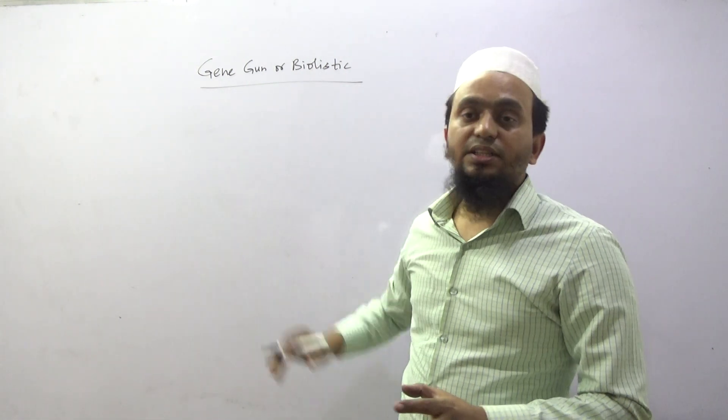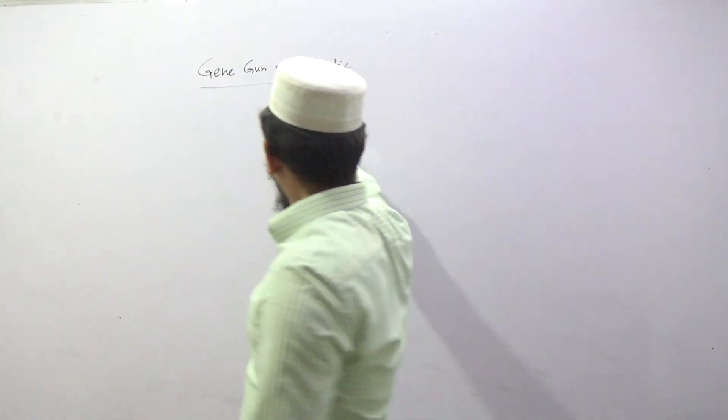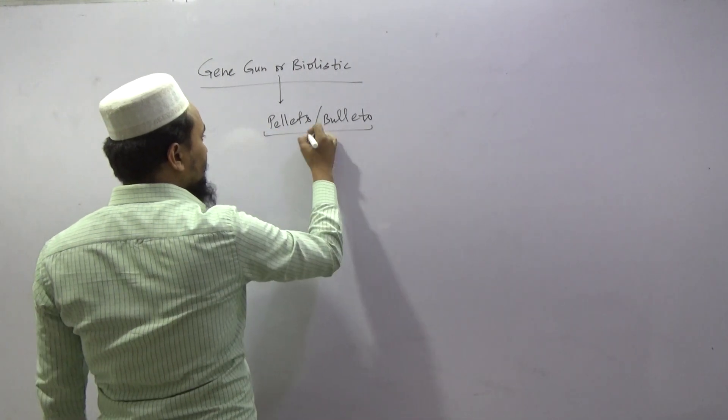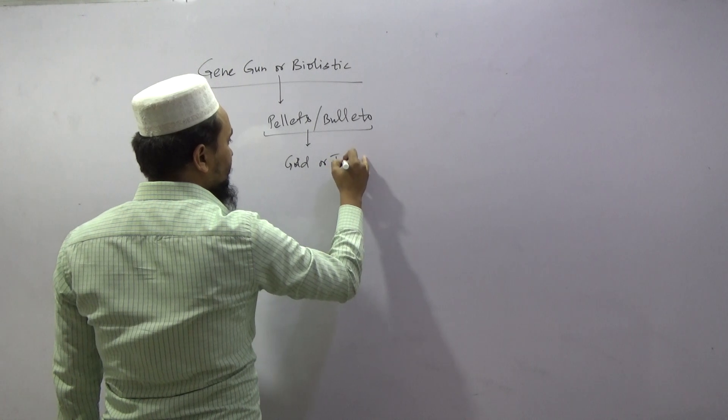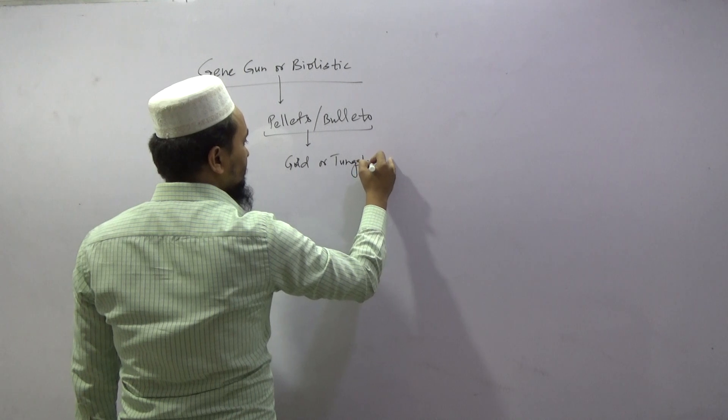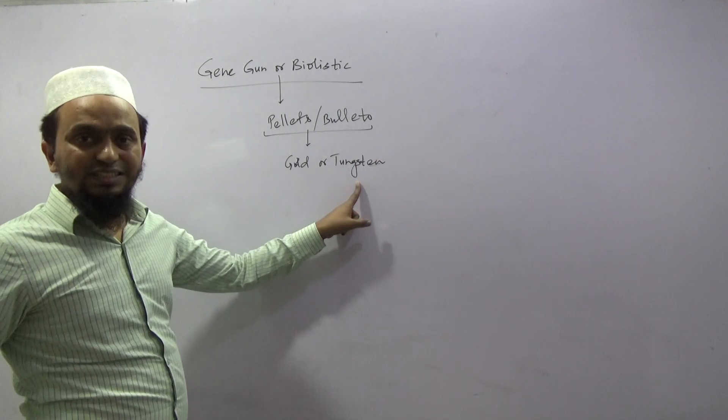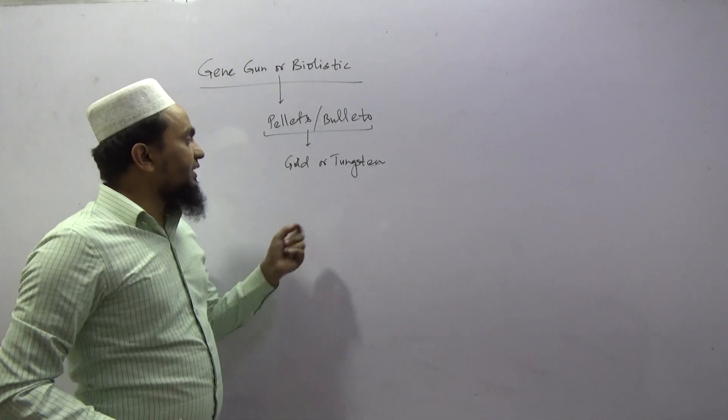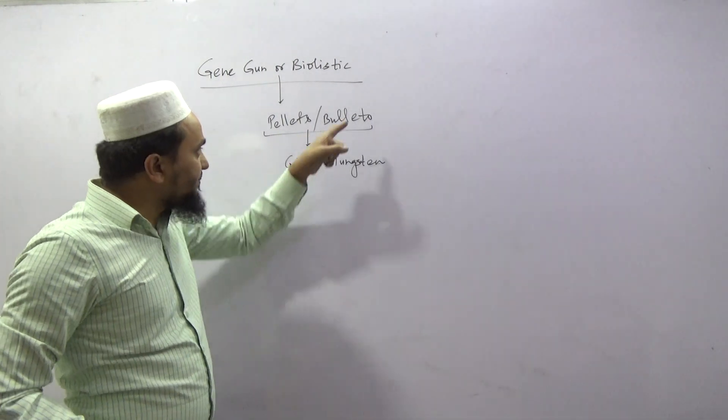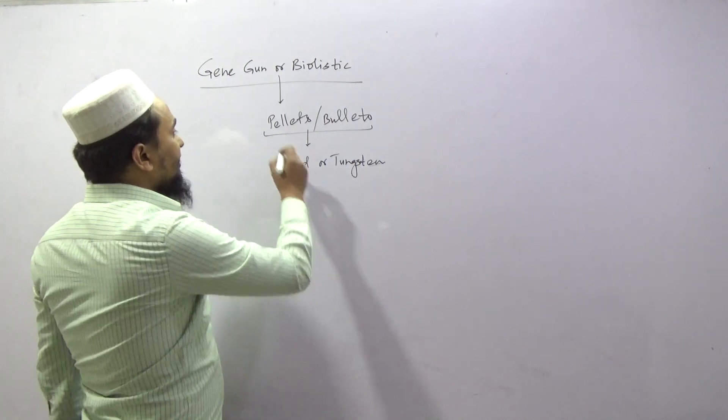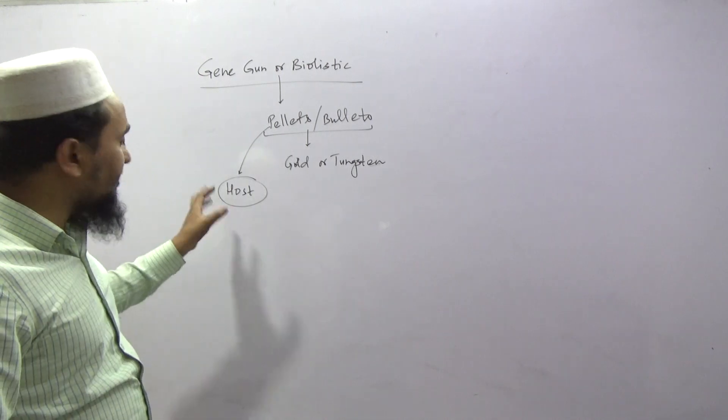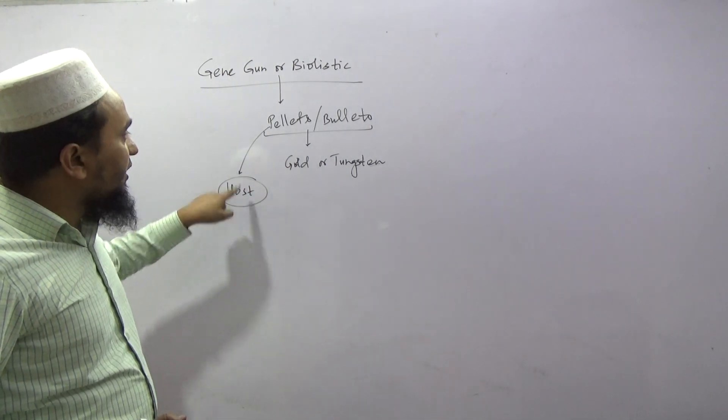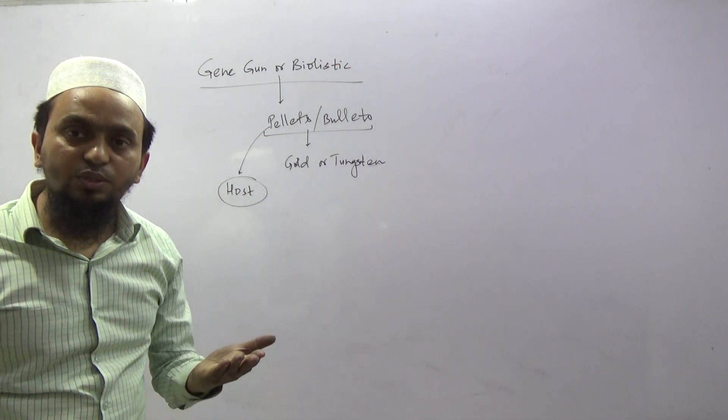So, plant cells are used with very high velocity bullets. This uses bullets or pellets. These pellets are made of gold or tungsten. Gold or tungsten are inert metals. These pellets are coated with the gene of interest. And then we insert into the host plant cell using these pellets made up of gold and tungsten coated with gene of interest.